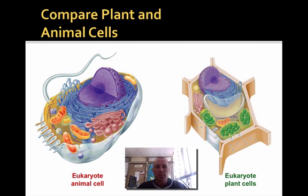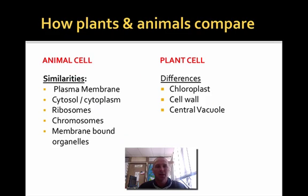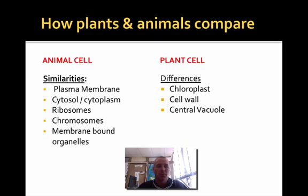Now let's take a quick comparison between plant and animal cells. I hope that you can remember some of these from regular biology. If we look at plant and animal, the big thing is they have three major differences. The first thing is that a plant cell has a chloroplast, it has a cell wall, and a central vacuole. These three things an animal cell does not have.